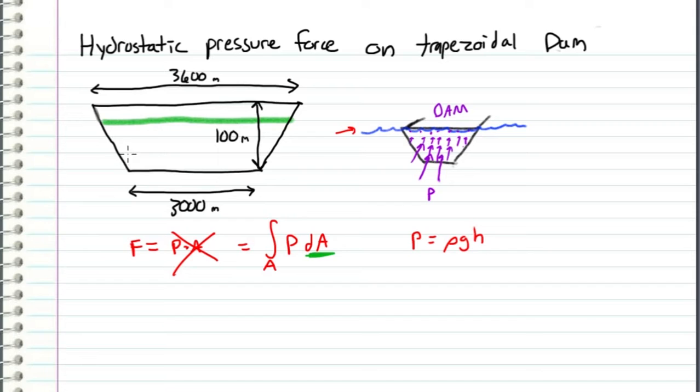it has constant pressure. We can express an arbitrary horizontal band as having thickness dh and width w. So dA equals w dh, and therefore our integral becomes the integral over the area